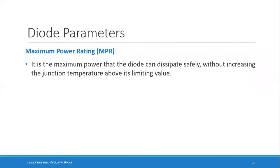Another parameter is maximum power rating. Power is the product of voltage and current, and the maximum power rating is the maximum power the diode can dissipate safely without increasing the junction temperature above its limiting value. Power is measured in watts. If power exceeds the maximum power rating, the junction temperature increases and the diode burns out.